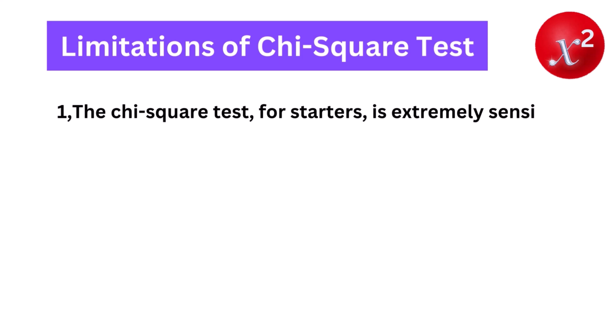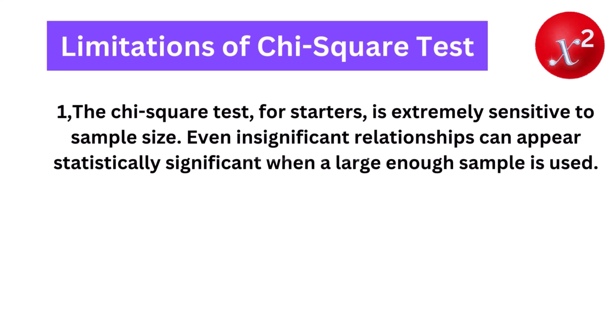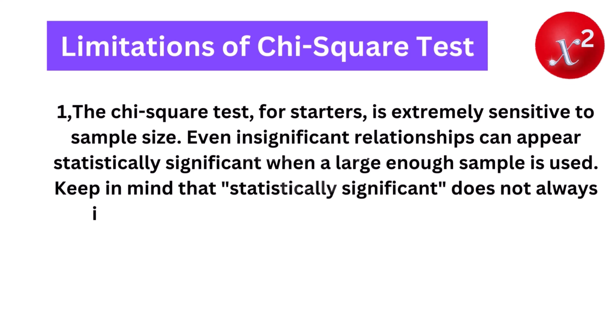Limitations of chi-square test. There are two limitations to using the chi-square test that you should be aware of. 1. The chi-square test, for starters, is extremely sensitive to sample size. Even insignificant relationships can appear statistically significant when a large enough sample is used. Keep in mind that statistically significant does not always imply meaningful when using the chi-square test.